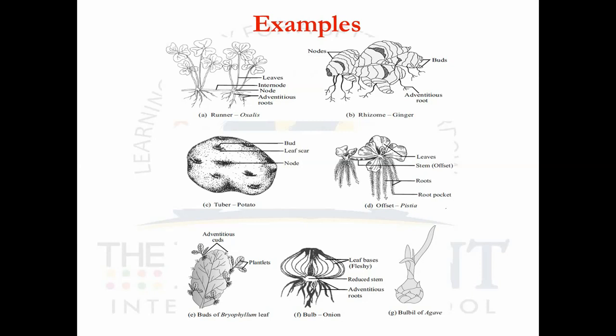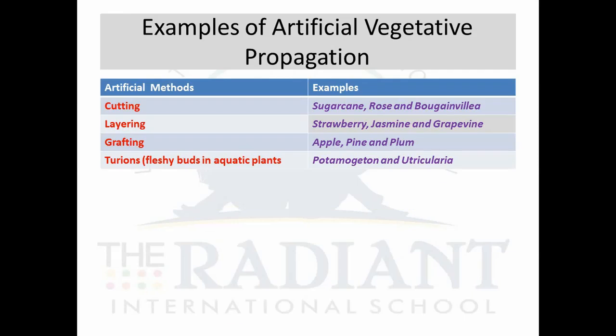Looking at the diagrams: the first is a runner — the Oxalis example — where between two plants there is a horizontal stem, from each node adventitious roots develop, and above that new leaves develop. The stem runs horizontally on the soil surface. Rhizome: ginger. Tuber: potato, where buds help produce new leaves. Offset: Pistia, the aquatic plant. Buds of Bryophyllum leaf. Bulb: onion. And Agave bulbils.